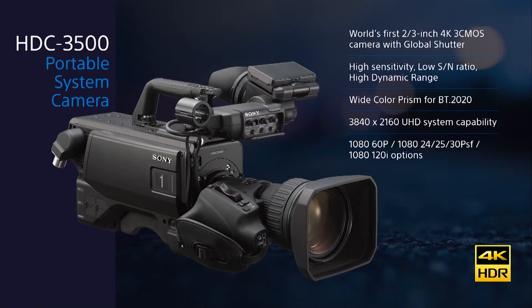At IBC in Amsterdam, we announced the camera that so many of you have been waiting for. For about the price of our extremely popular HDC 2500, the HDC 3500 can be configured as an HDR-capable 4K or HD camera system. The camera ships from the factory with full HD output, with 4K available as an upgrade. Because the HDC 3500 is compatible with our current large lens adapters, viewfinders, and remote panels, it's the perfect choice to work side-by-side with our legacy cameras.